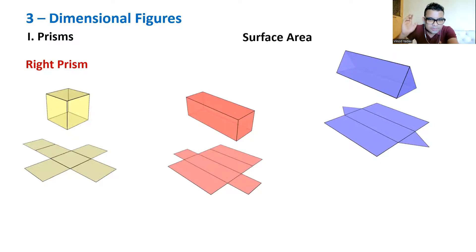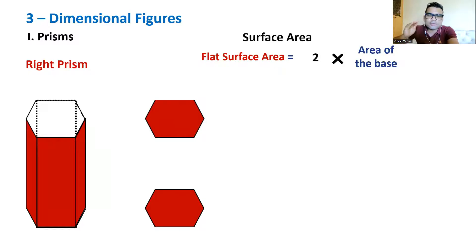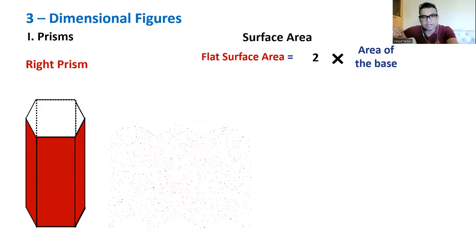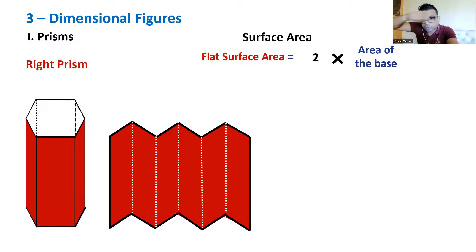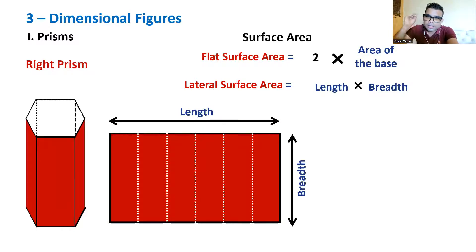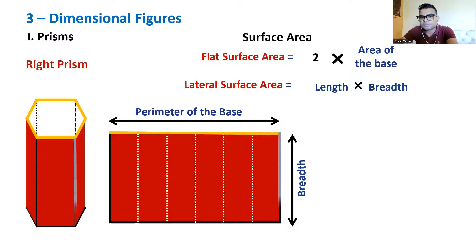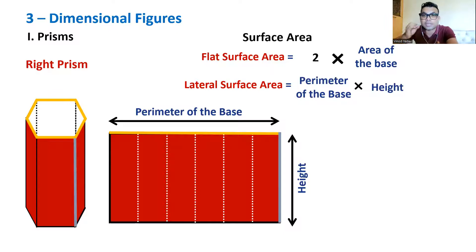Area of the base × 2 gives the flat surface area, since the base and top are the same regular polygon. For lateral surface area: if you stretch out all the rectangular walls, you get a rectangle. Its length is the perimeter of the base and its breadth is the height of the prism. So lateral surface area = perimeter of the base × height. Total surface area = flat surface area + lateral surface area.